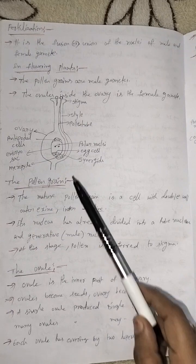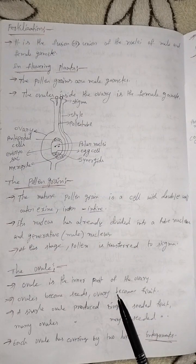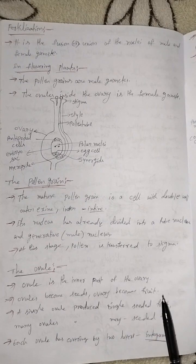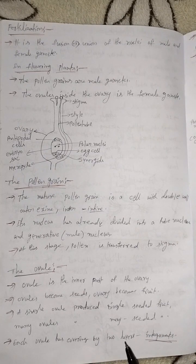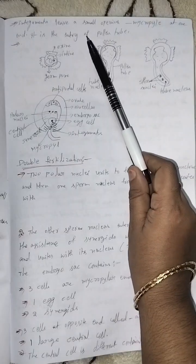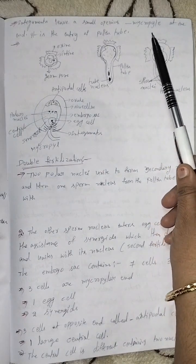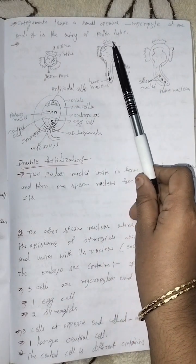At the stage when pollen is transferred to the stigma, the ovule is the inner part of the ovary. Ovules become seeds and the ovary becomes a fruit. A single ovule produces a single-seeded fruit; many ovules produce many-seeded fruits. Each ovule is covered by two layers called integuments.